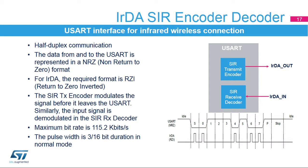The USART supports IRDA specifications, which is a half-duplex communication protocol. The data from and to the USART is represented in NRZ or non-return-to-zero format where the signal value is at the same level through the entire bit period. For IRDA, the required format is RZI or return-to-zero inverted, where a one is signaled by holding the line low and a zero is signaled by a short high pulse. The SIR transmit encoder modulates the NRZ transmit bit stream output from the USART, and the SIR receive decoder demodulates the return-to-zero bit stream from the infrared detector and outputs the received NRZ serial bit stream to the USART.